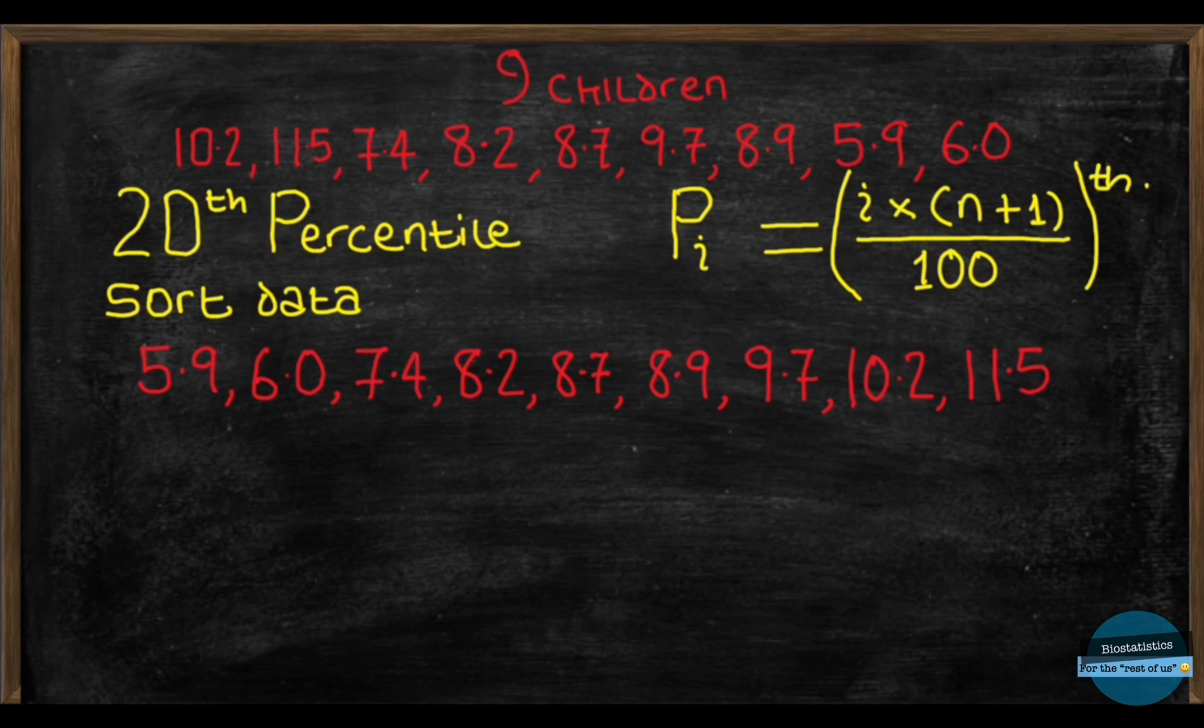Great. So, using the formula, i will be 20, n is 9 because we had 9 children and putting both of these into the formula, we'll have p20 is equal to 20 times 9 plus 1 in bracket, all divided by 100. Remember, I said this formula only gives the position and not the value.